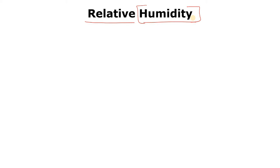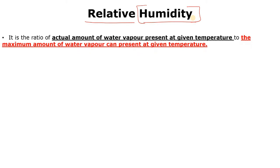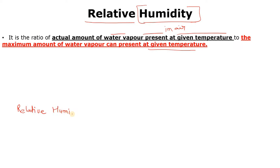Now let's understand what relative humidity is. Relative humidity is a ratio — the ratio of the actual amount of water vapor present in air at a given temperature, to the maximum amount of water vapor that can be present at that same given temperature. Whenever we discuss about relative humidity, we discuss it with respect to the temperature — temperature plays a very important role here.